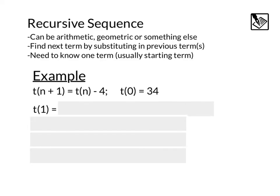If we wanted to find t(1), that would be 0 plus 1, which means we have t(0) minus 4. If we plug in 0, 0 plus 1 is 1. That equals t(n), which is 0 minus 4. And basically what we're doing is taking this t(0) and substituting it in for t(0) here. 34 minus 4 is 30. So t(1) equals 30.